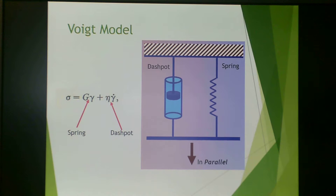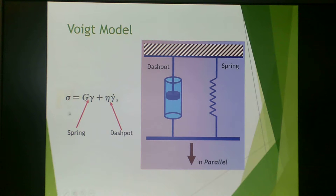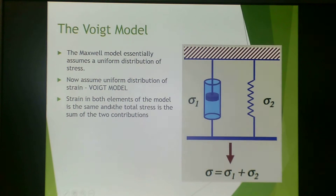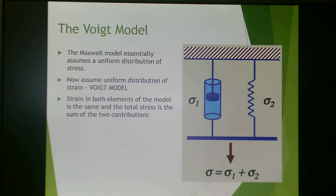In the Voigt model, you have a spring and a dashpot in parallel. This is best represented by the expression where shear stress is related to the rigidity modulus times strain plus the viscosity times the shear rate. The elastic component is represented by the spring and the viscous component by the dashpot. The Maxwell model assumes a uniform distribution of stress, whereas the Voigt model assumes a uniform distribution of strain. Strain in both elements is the same, and the total stress is the sum of the two contributions.